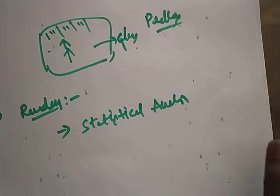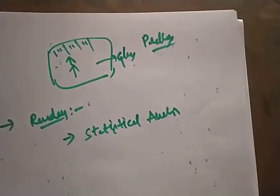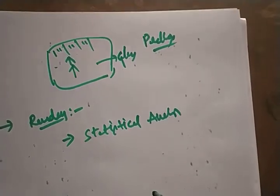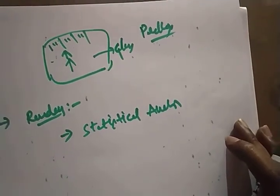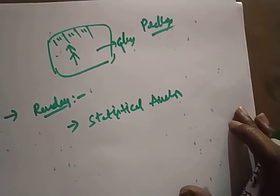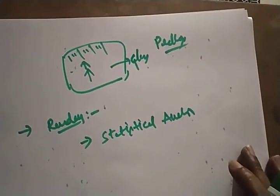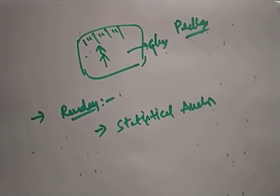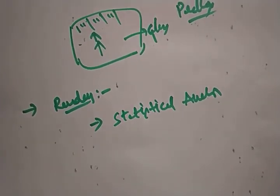In the next class we will discuss statistical analysis of random errors, which is a very important concept. There are around 10 to 12 formulas involved. We will solve one problem using those formulas and then complete the error analysis topic. I hope this is clear for those who raised doubts — thank you very much.